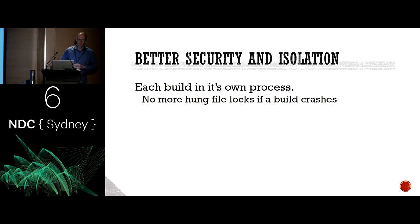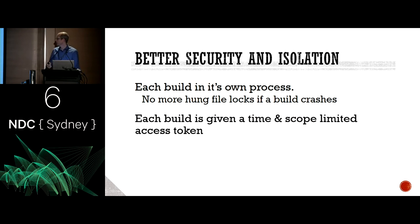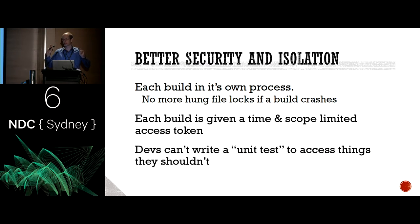There were some security gaps in the old system. Each build now runs in its own separate process — that means if you've ever had a build hang and lock files, you had to log on to the build server and release the files. That's not there anymore. If a build hangs and you kill it, because it's out of process, that process disappears and the locks get released. Each build is also now given a time and scope-limited access token, so previously the build would run under full permissions — that doesn't happen anymore. A naughty developer doesn't get to write a task that does something evil on the TFS box.